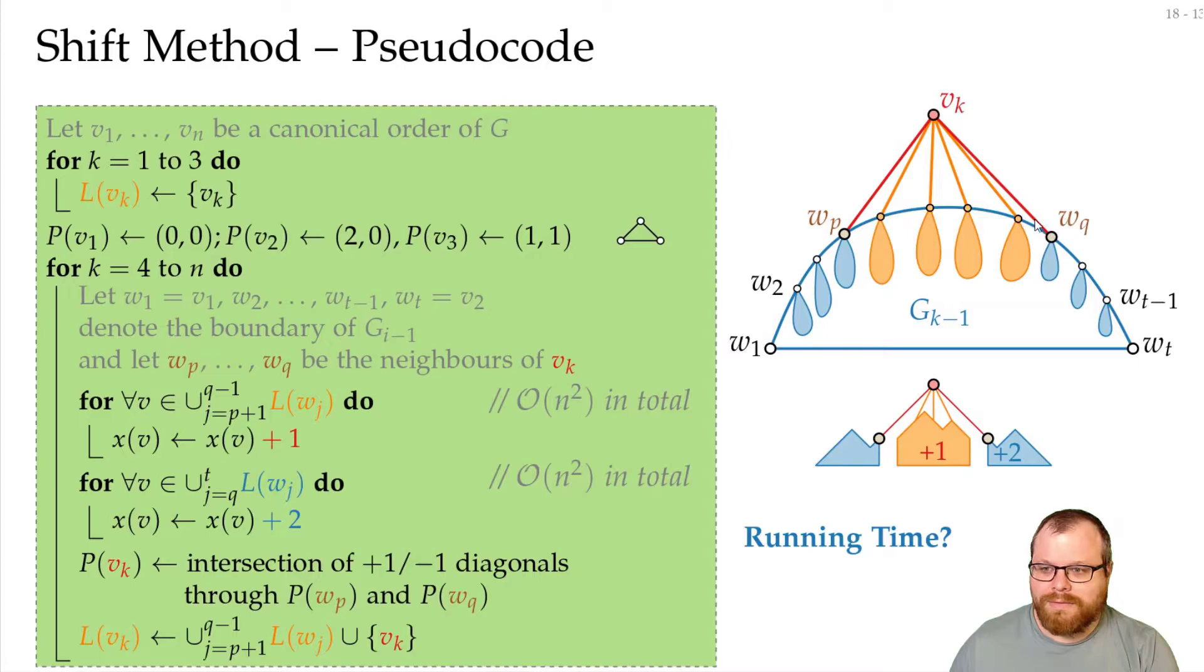But even then, for this part here, just looking at the parents can still be linearly many. And then we still have quadratic time in total if at every step we have to update the coordinate for this parent. So we have to be even smarter.